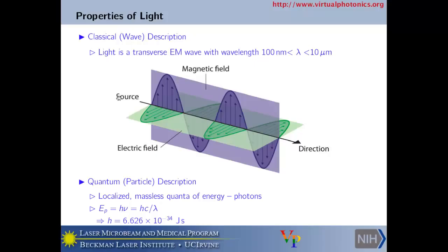So let's get started with models of light propagation. This is undergraduate physics, but it's always good to remind ourselves. One can treat or view light in two different ways. You have the classical wave description — we recognize that light is a transverse electromagnetic wave, with the direction of propagation mutually orthogonal to both an electric field oscillation and a magnetic field oscillation.